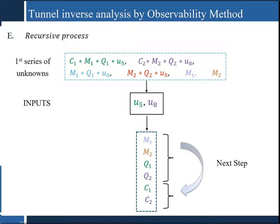When an initial observability analysis identifies a deflection, force, or structural parameter, this information helps observe new parameters in adjacent elements through the recursive process. In this analysis, the observed information is successfully introduced as input data in the observability analysis. Below, we have single and coupled unknown variables. In the first step, we identify unknowns such as M1 and M2. The first measurement inputs are U5 and U8, leading to identification of Q1 and Q2. In the next step, using the obtained known variables in the recursive method, we identify C1 and C2 as well as the remaining unknowns.